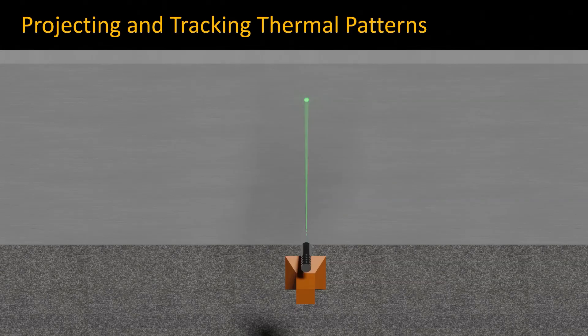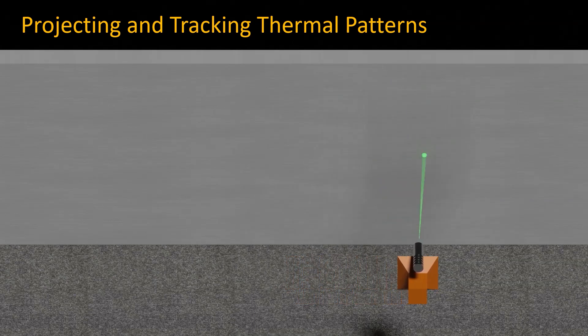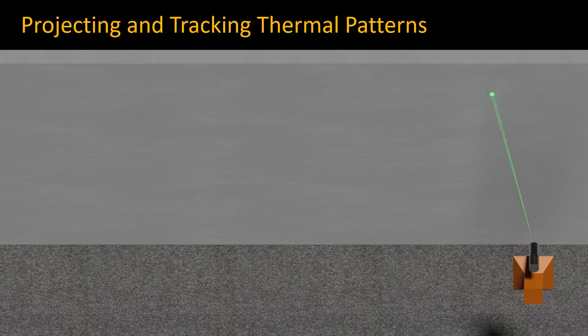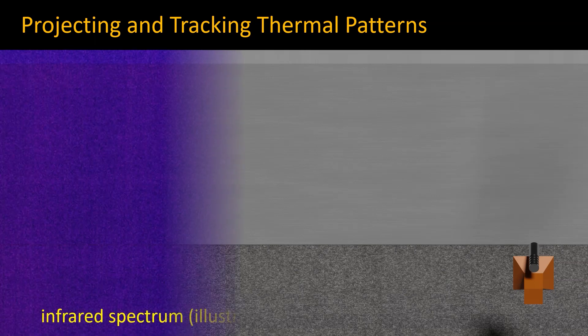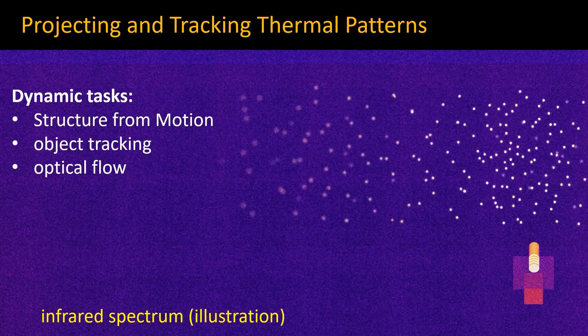In this paper we accomplish this by building a novel system that combines a thermal camera with a laser projector. The system uses the laser to paint heat patterns that stick to object surfaces. While invisible to a standard camera, the heat pattern can be seen and therefore tracked in the infrared domain. This enables the system to perform various dynamic vision tasks like structure from motion, object tracking, and optical flow on completely textureless objects.